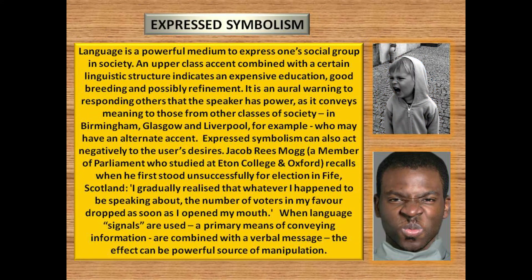Expressed symbolism: language is a powerful medium to express one's social group in society. An upper-class accent combined with a certain linguistic structure indicates an expensive education, good breeding and possibly refinement. It is an oral warning to responding others that the speaker has power, as it conveys meaning to those from other classes of society — in Birmingham, Glasgow and Liverpool, for example — who may have an alternate accent. Expressed symbolism can also act negatively to the user's desires. Jacob Rees-Mogg, a member of parliament who studied at Eton College and Oxford, recalls when he first stood unsuccessfully for election in Fife, Scotland: 'I gradually realized that whatever I happened to be speaking about, the number of voters in my favor dropped as soon as I opened my mouth.' When language signals are combined with a verbal message, the effect can be a powerful source of manipulation.